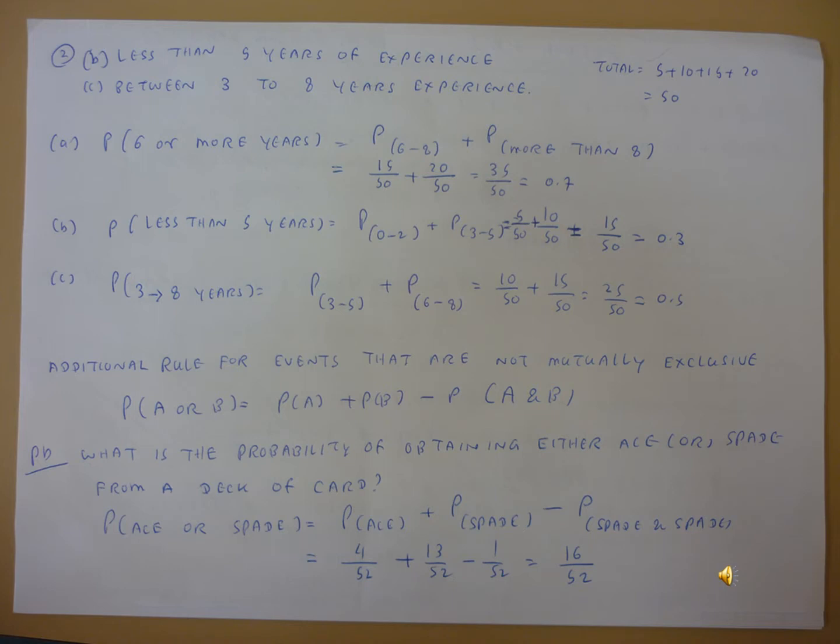The total number of cards is 52 and the number of aces is 4, so P(ace) equals 4 by 52. The total number of cards is 52 and the number of spade cards is 13, so P(spade) equals 13 by 52.